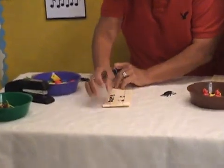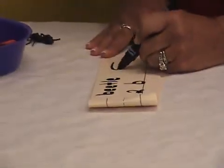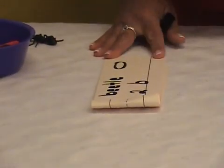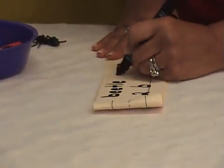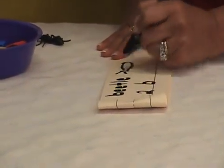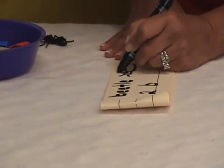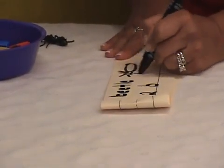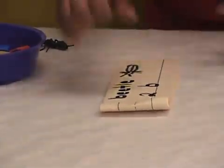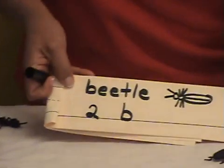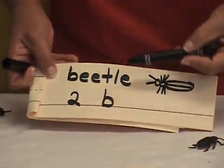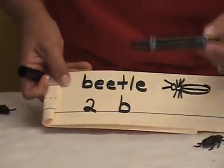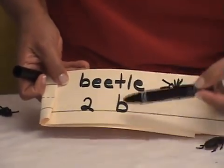Now I'm going to draw my beetle — it's long enough. And of course it has six little legs: one, two, three, four, five, six. This child might be at this level: able to copy the word, able to write the number two, and he knows that 'beetle' starts with the letter B.